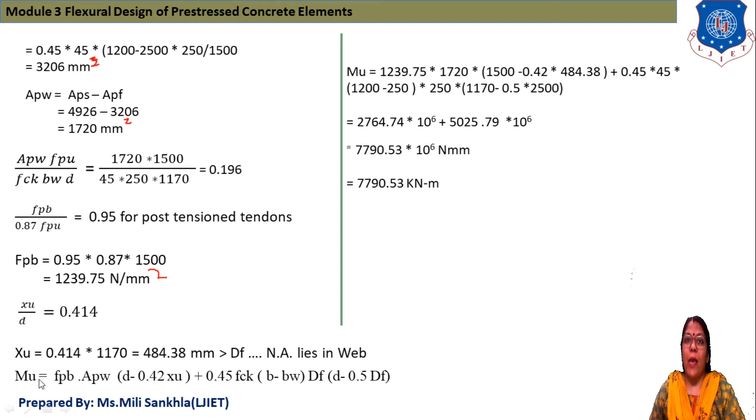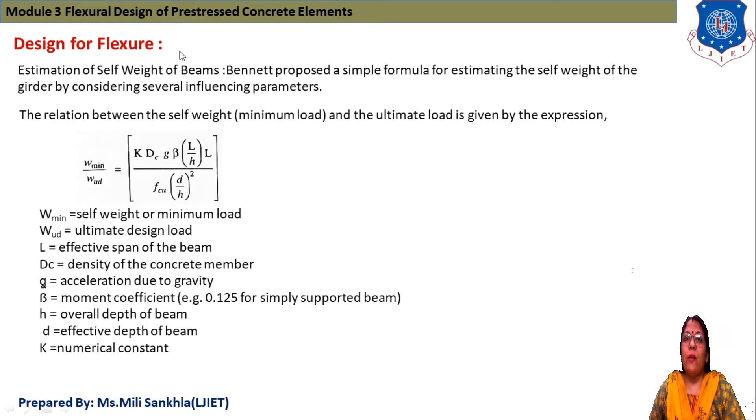MU equals FPB × APW × (D - 0.42XU) + 0.45 × FCK × (B - BW) × DF × (D - 0.5DF). Putting all values, we get our ultimate flexural strength, ultimate moment is 7790.53 kN·m. This is the example related to strain compatibility method.